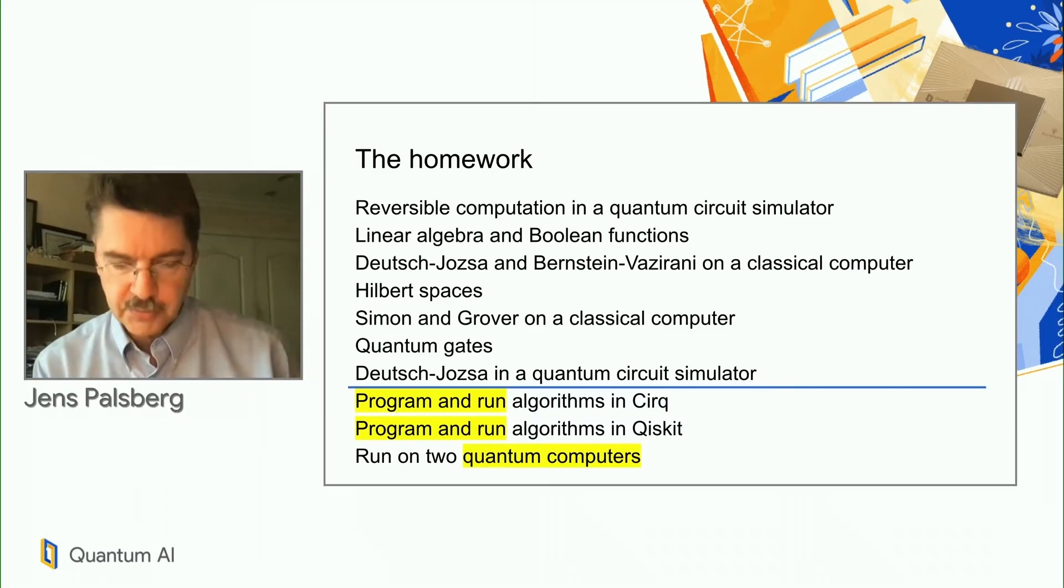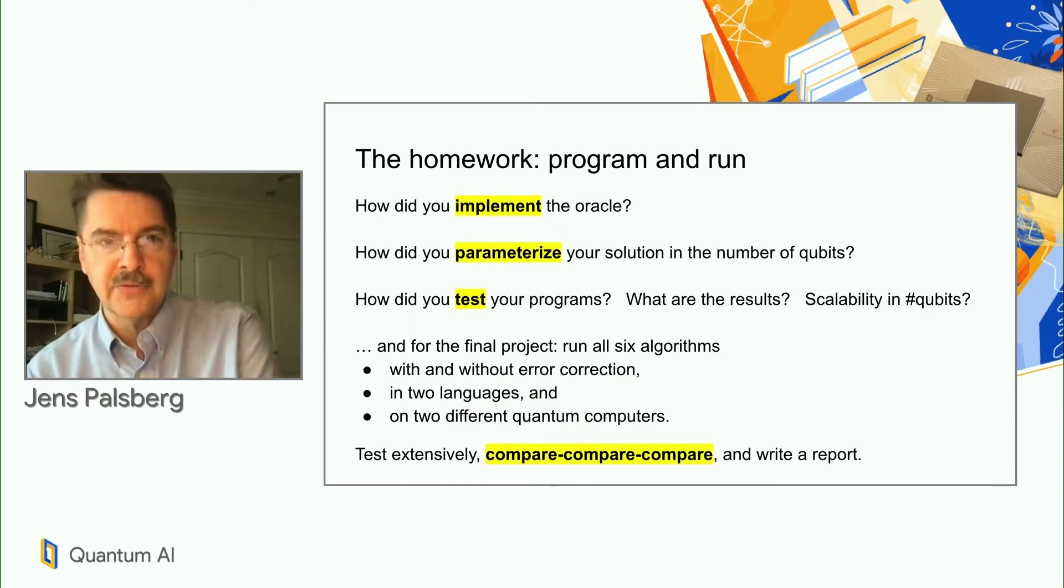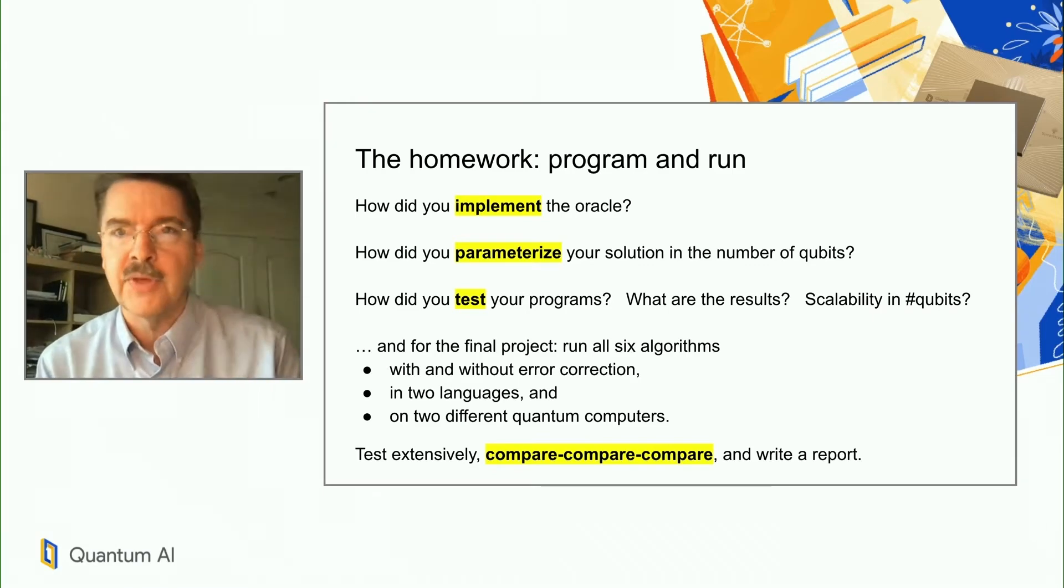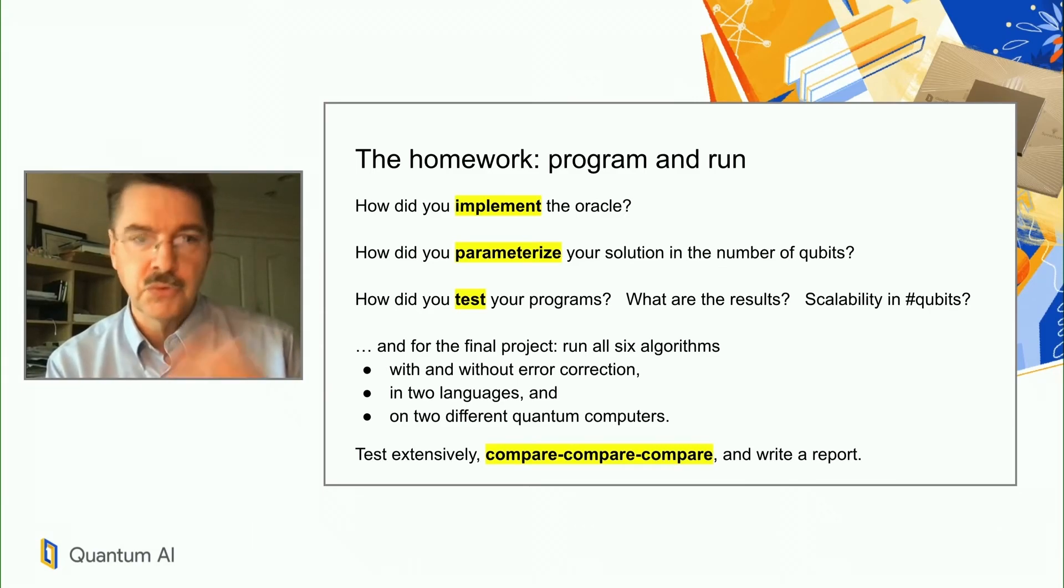The thing that I think put the touch on it was that I asked them to write a report about their experience. On the next slide you can see the kind of things that I asked them to talk about. So let's get into some things where there's some choice and options and things they can try. How did you implement the oracles? How did you parameterize your solution in the number of qubits? That's something we love in computer science, write general code. And what did you do to test it? What were the results? How did you experience scalability and number of qubits? Then just try different things. Try with some error correction or without error correction, do you see a difference? Do you see a difference between working in the two languages? Do you see a difference between working on the two quantum computers? Just compare, compare, compare and write a report about it.